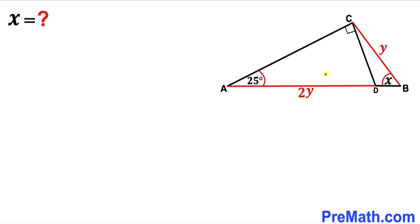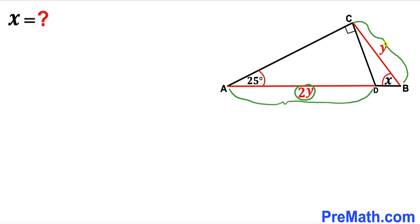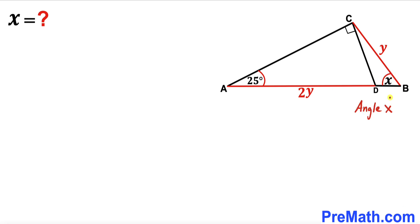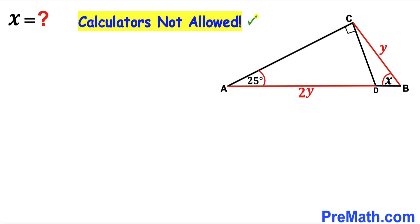In this video we have a right triangle ACD inside a bigger triangle ACB, such that segment AD is 2 times Y, segment BC is Y, angle A is 25 degrees, and angle B is represented by X. Our task is to find the value of angle X without using calculators at all.